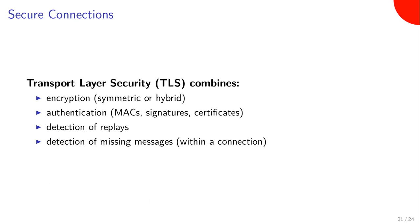Building on these things, you end up with something called transport layer security, or TLS for short. TLS is a network protocol that combines much of what I have introduced: encryption (either symmetric or hybrid), authentication (MACs, signatures, and certificates), and it adds in a couple more things to detect replays of messages. If an attacker was to replay a message recorded earlier, TLS can detect this. TLS can also detect if a message has been suppressed by the attacker within a connection.